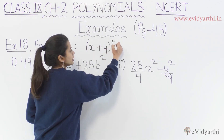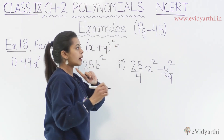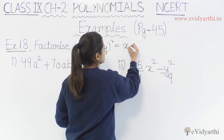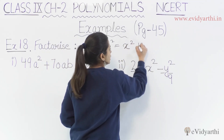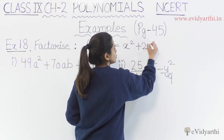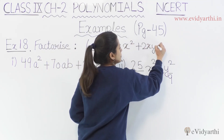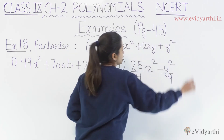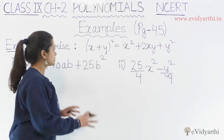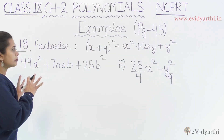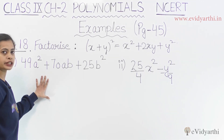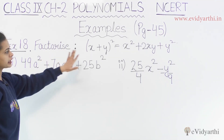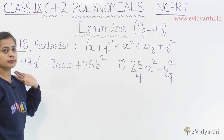Let's revise the identity. What is the identity? x² plus 2xy plus y². So that means if I match the question to this identity, I can clearly identify the factored form.